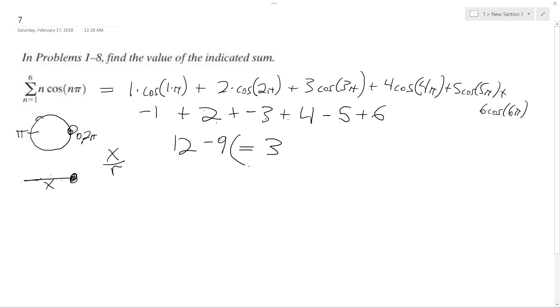So the whole solution, n equals 1 to 6 for the summation of n times cosine n pi. The summation, even though it's an alternating series, is 3.